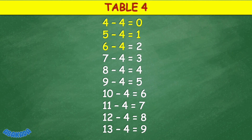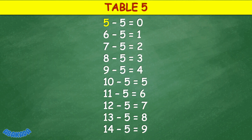Table 4: 4 minus 4 equals 0, 5 minus 4 equals 1, 6 minus 4 equals 2, 7 minus 4 equals 3, 8 minus 4 equals 4, 9 minus 4 equals 5, 10 minus 4 equals 6, 11 minus 4 equals 7, 12 minus 4 equals 8, 13 minus 4 equals 9.